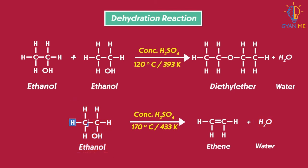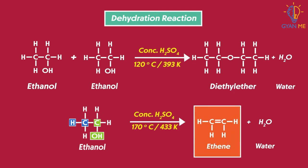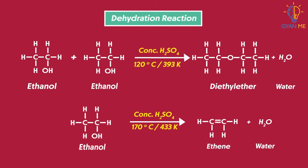H is released from one carbon atom and OH is released from the other carbon atom. Now both these carbon atoms have one valency free and they bond with each other to form ethene — a compound with a double bond. Thus, ethene is formed as a result of complete dehydration of ethanol, and this reaction is also used to obtain unsaturated hydrocarbons from saturated hydrocarbons.